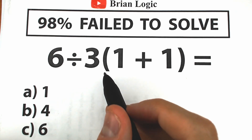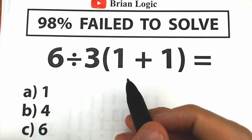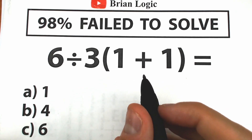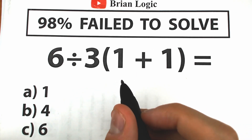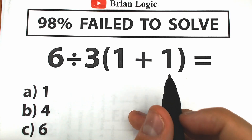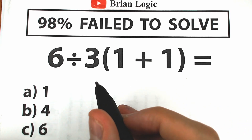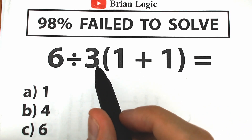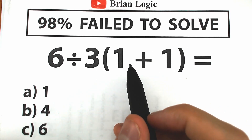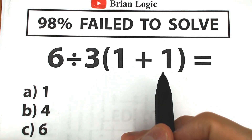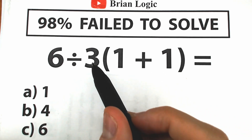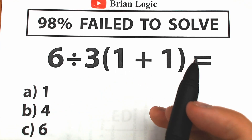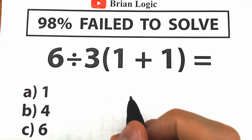6 divided by 3 and 1 plus 1 inside parentheses. On the first side, this is a very easy question because it's not a complicated challenge with square roots, sine, or cosine. We have a regular expression only with parentheses, division, multiplication, and addition — nothing hard on the first side.